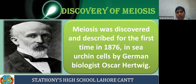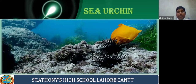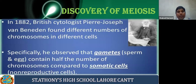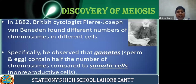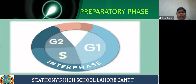We discussed the discovery of meiosis. Meiosis was discovered and described for the first time in 1876 in sea urchin cells by German biologist Oscar Hertwig. It was further explained by a British cytologist — cytologist meaning a scientist who studies cell biology or chromosomes — named Joseph, who found different numbers of chromosomes in different cells. He observed that gamete cells like sperm or egg contain half the number of chromosomes compared to somatic cells.